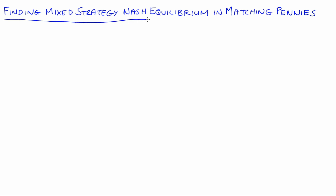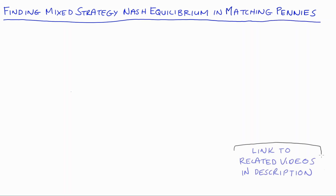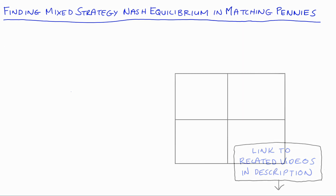Hi everyone. In this video I'm going to demonstrate finding the mixed strategy Nash Equilibrium in the Matching Pennies game. I do have other videos on mixed strategies — an introduction video and a video on finding all of the Nash Equilibria in the Battle of the Sexes game. I'll link all of the related videos in the description if you'd like to have a look.